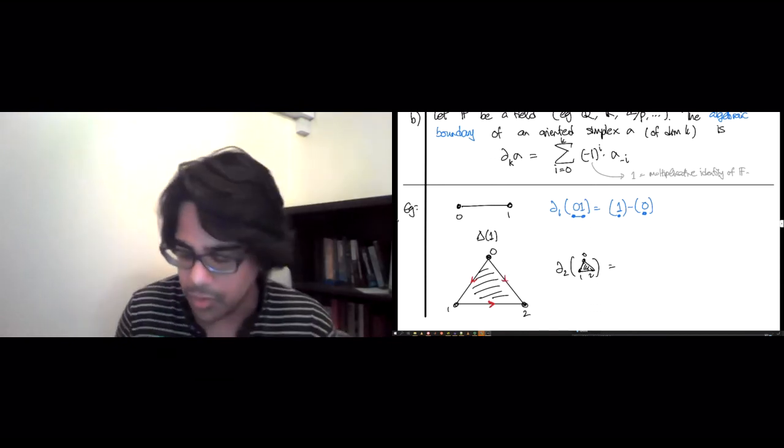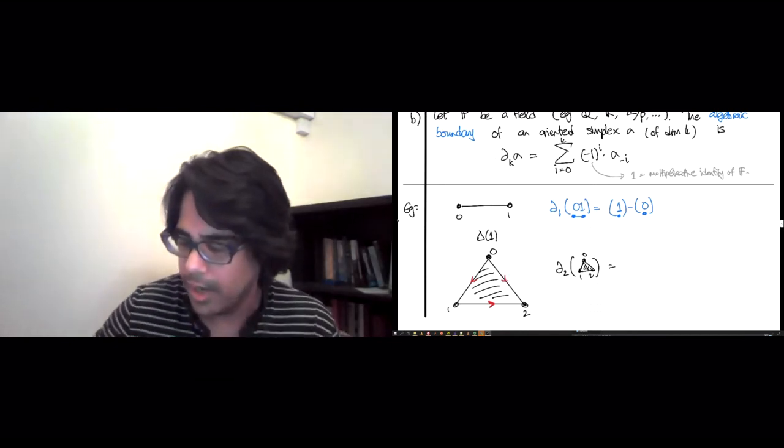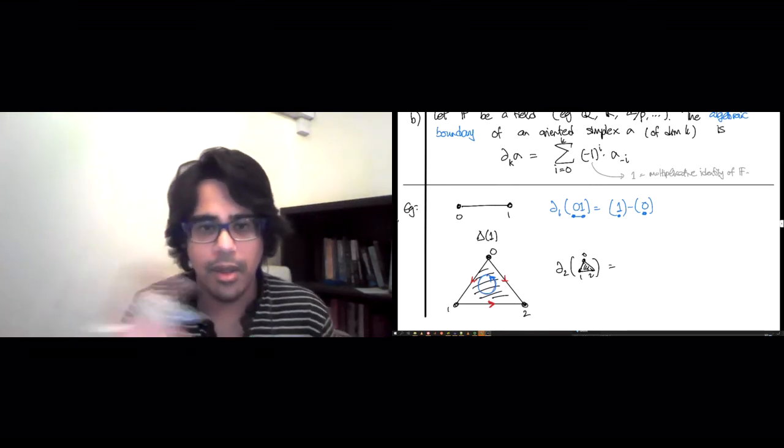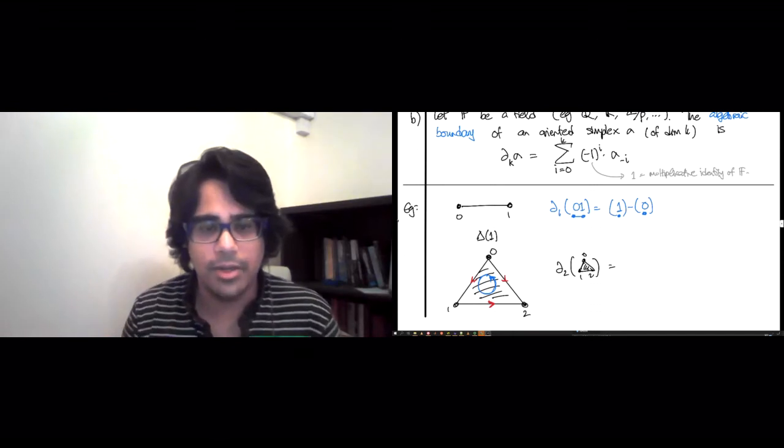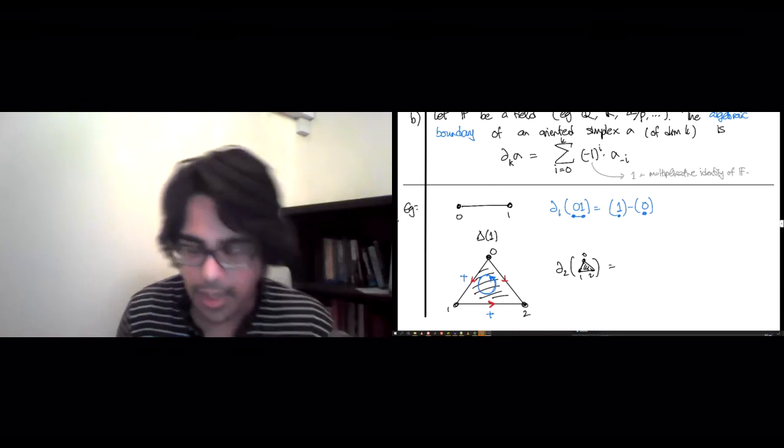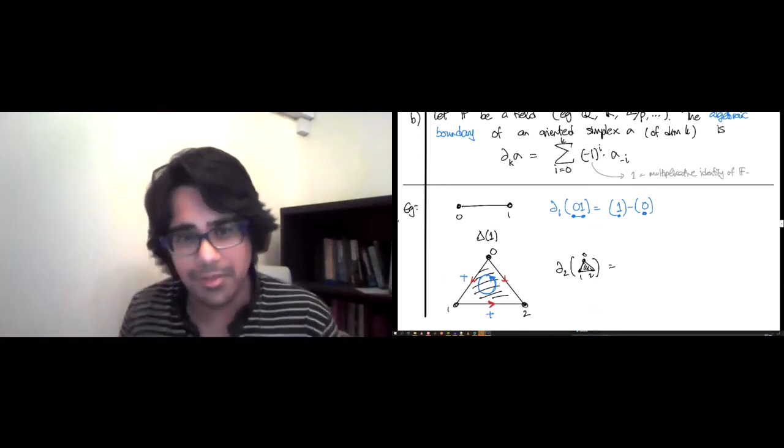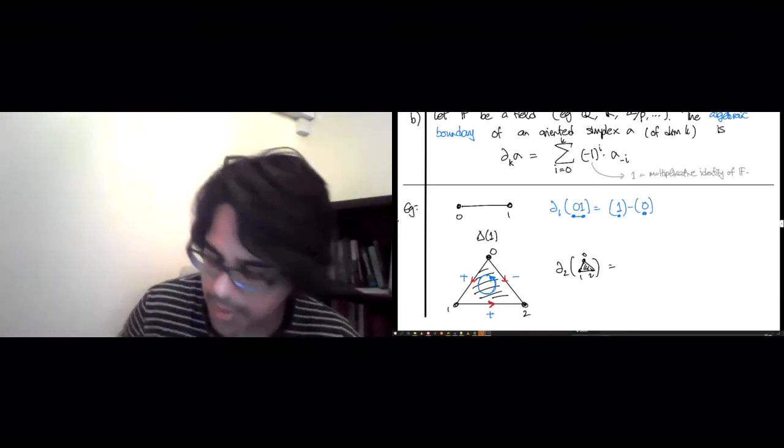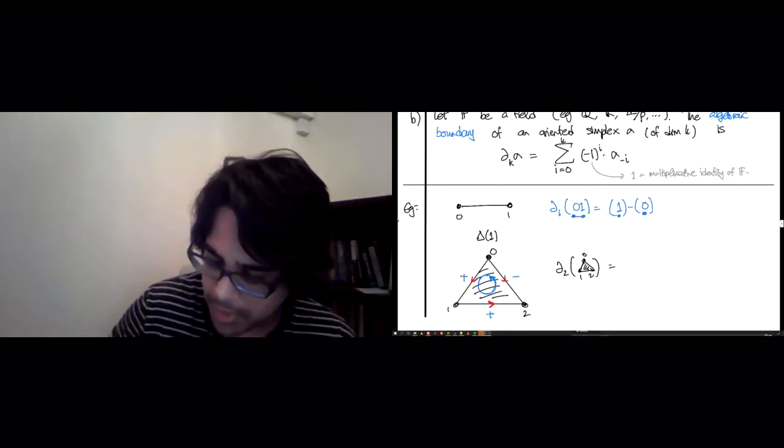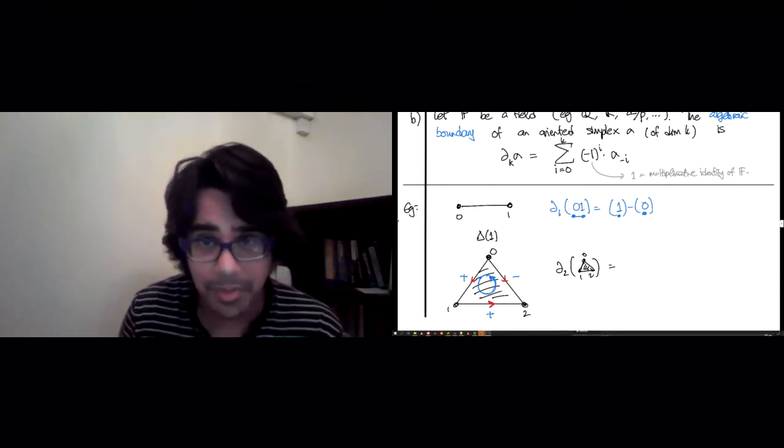And one way to see this is to draw orientations on the edges the way you would for a graph. So 0 to 1, 1 to 2, 0 to 2. And then look at things counterclockwise inside. So draw a counterclockwise loop. And now any time the direction on the edge agrees with the direction on the loop, you get a plus 1. So plus it agrees, plus it agrees. And now when you come to 0,2, the loop is going up, but the edge is coming down, so it's a minus sign.